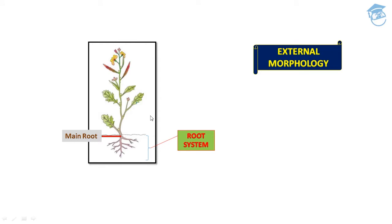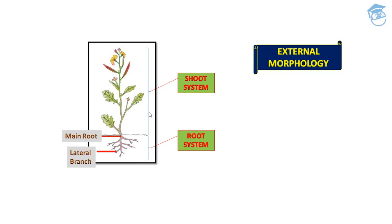The primary root emerges from the seed, grows inside the soil, and it bears lateral roots of several orders that are referred to as secondary, tertiary, etc. roots. The shoot system is heterogeneous because it bears fruits, leaves, branches, stem, flower, etc.